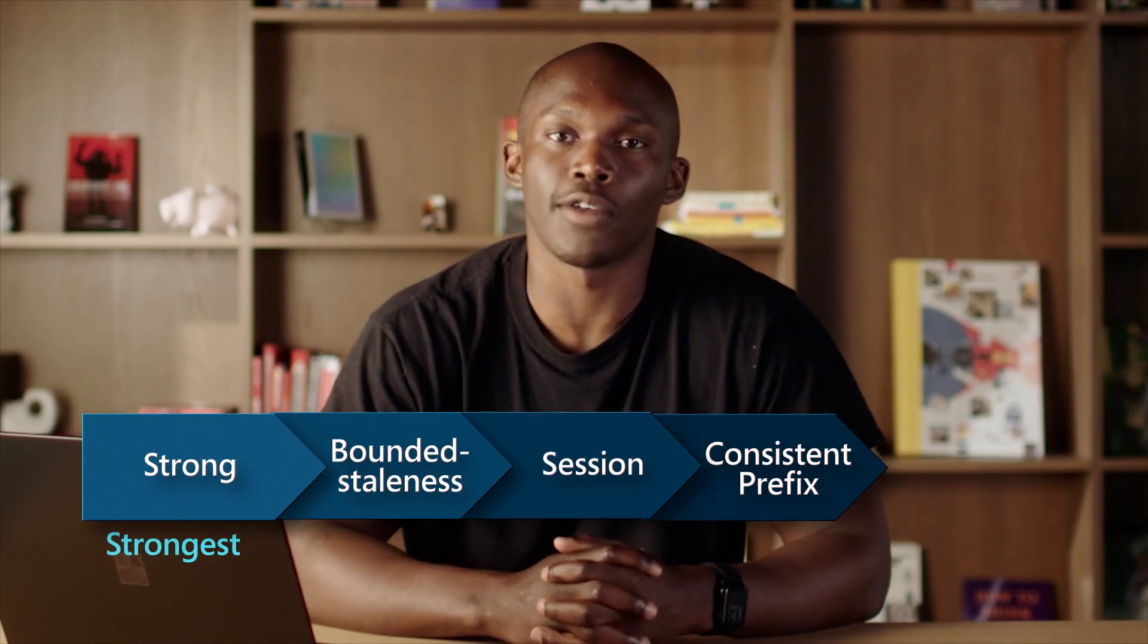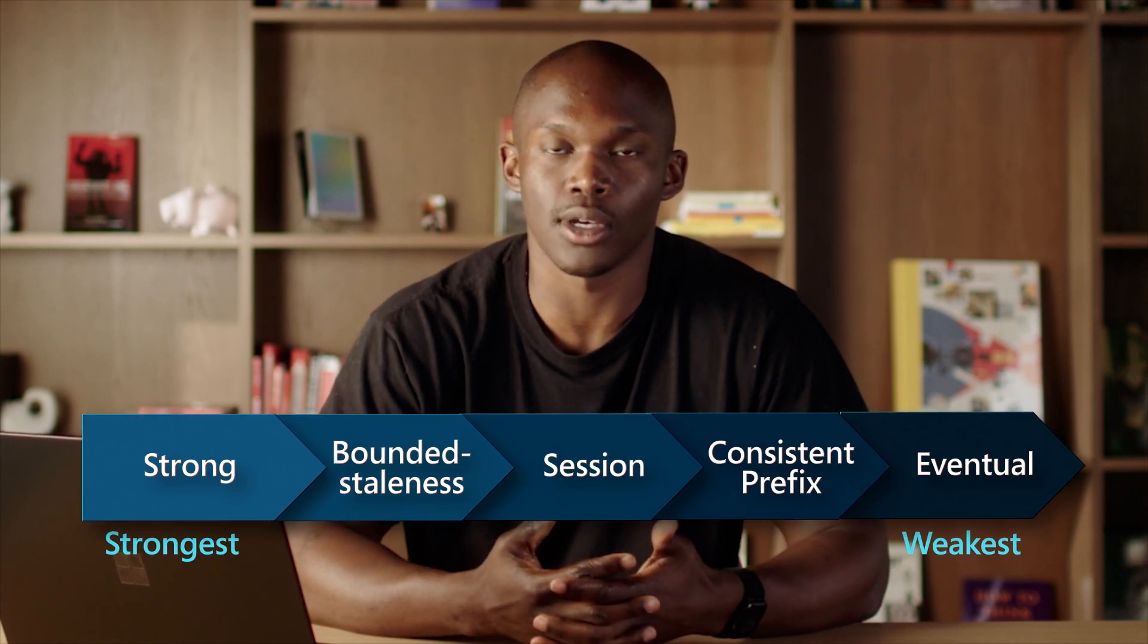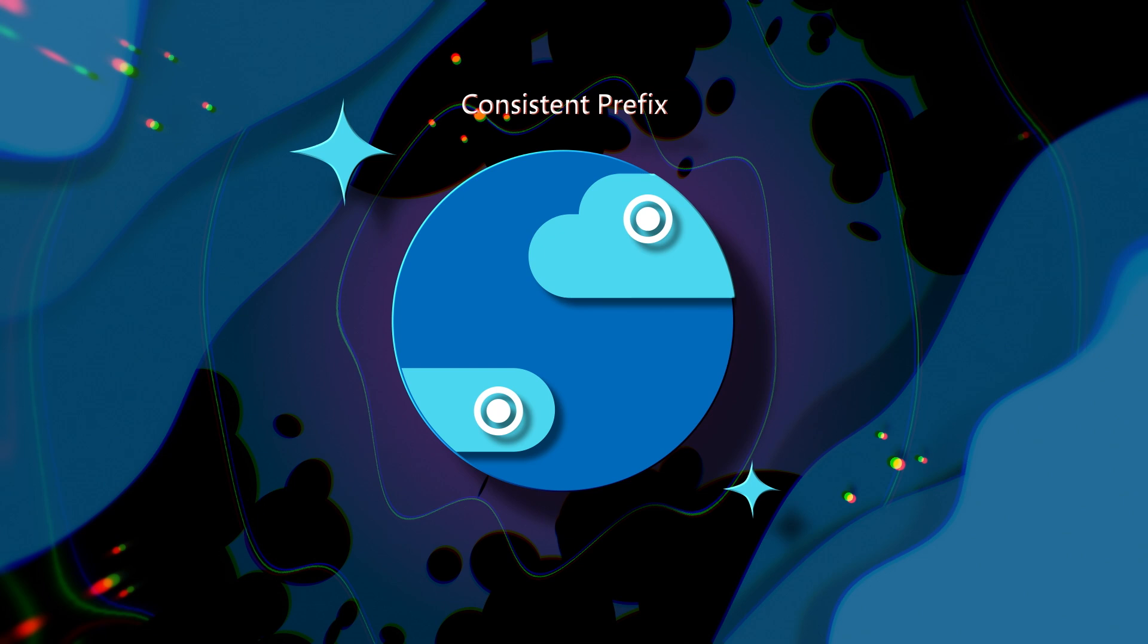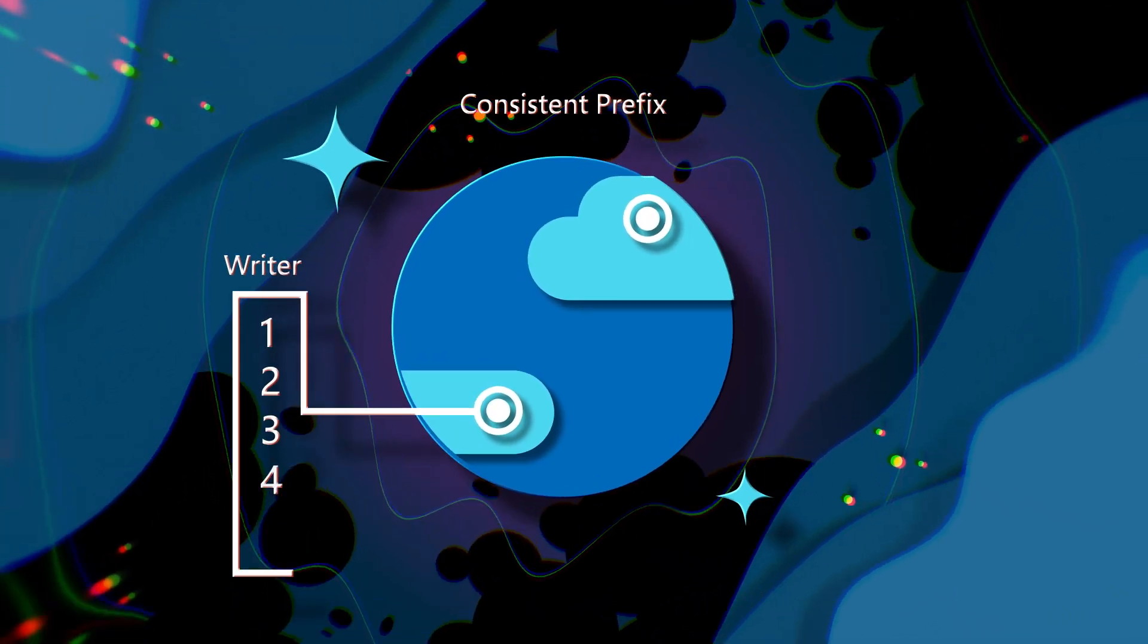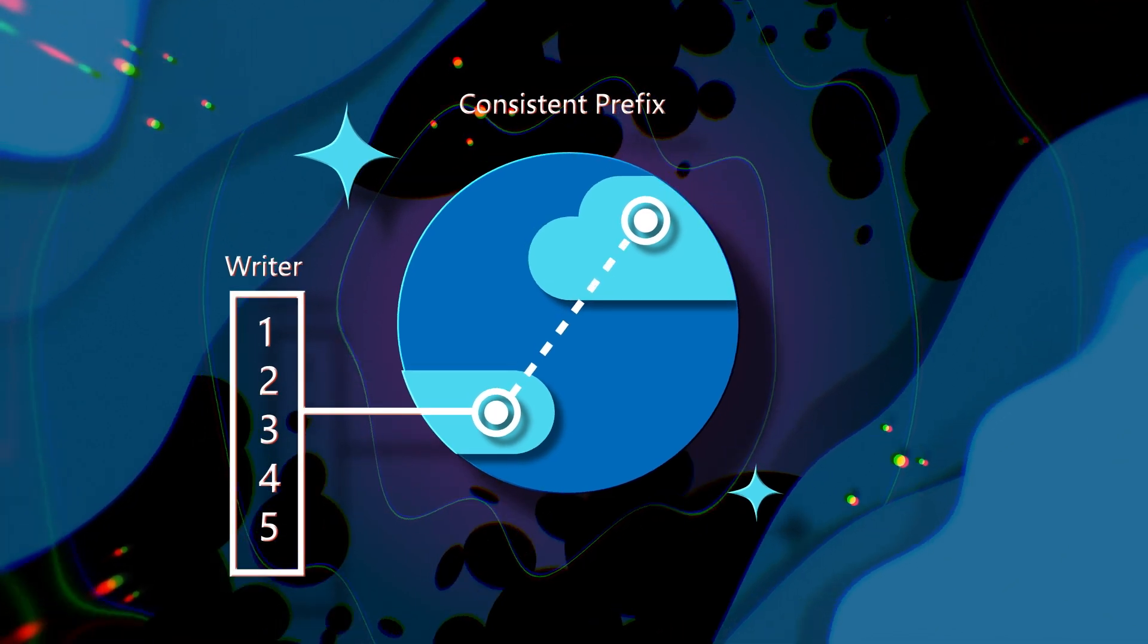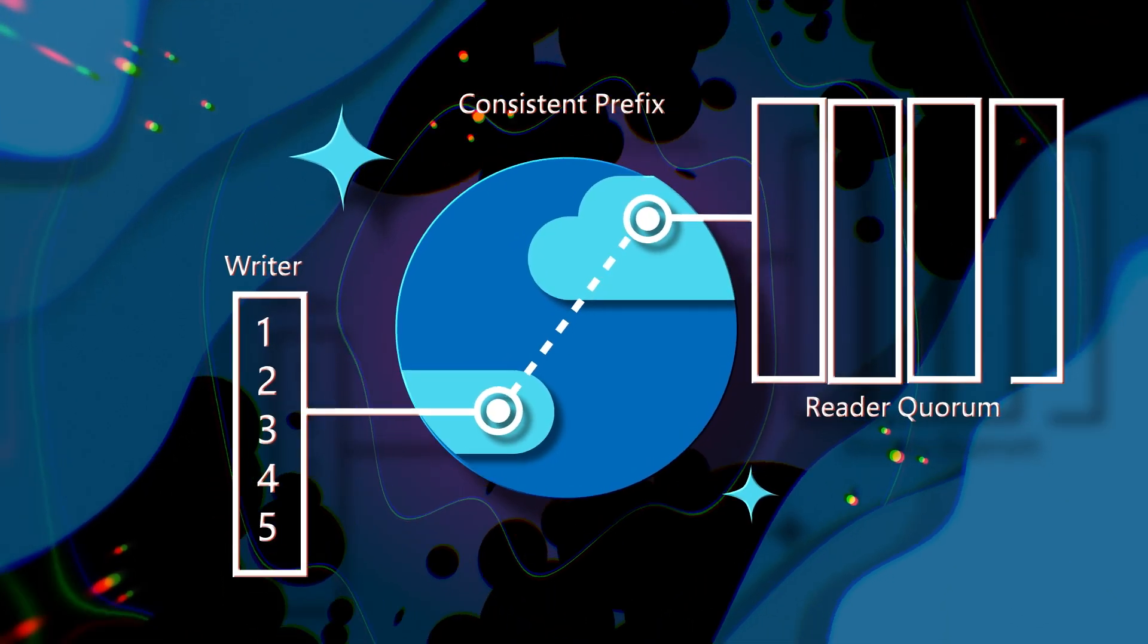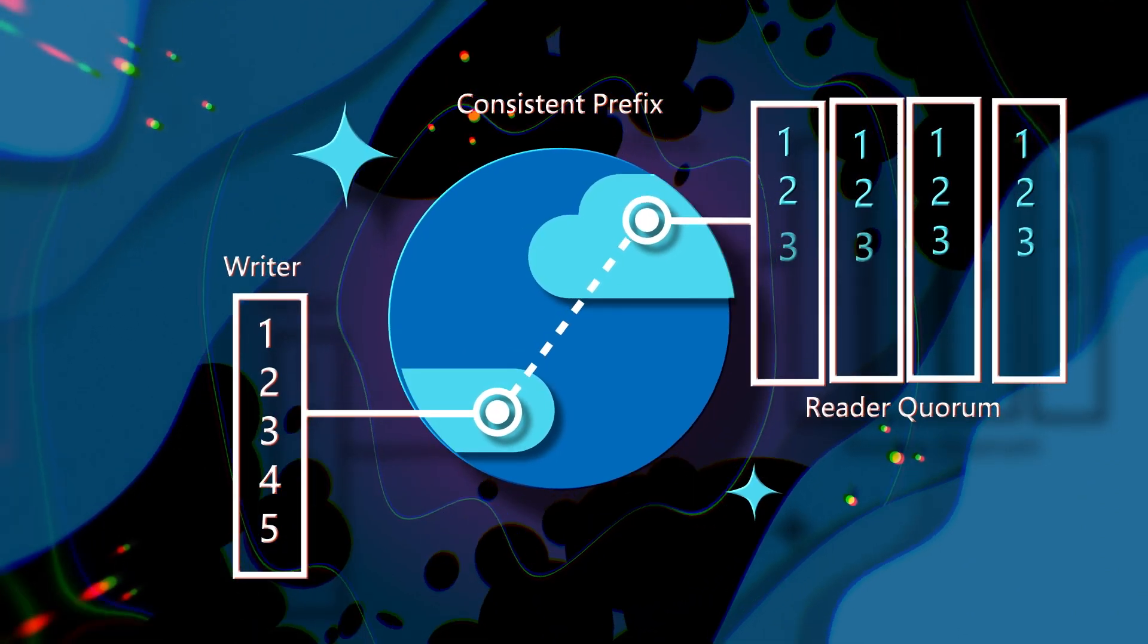In between these strong and eventual consistency models, we have consistent prefix, session consistency, and bounded staleness. With consistent prefix, the only guarantee we can give here is that replication always happens in order. So if we make five writes to our database, we'll replicate such that we'll see writes one through five in that order, and one replica in the quorum could have writes one, two, three, another could have one, two, three, four, but we'll never see a replica with only writes one and four.